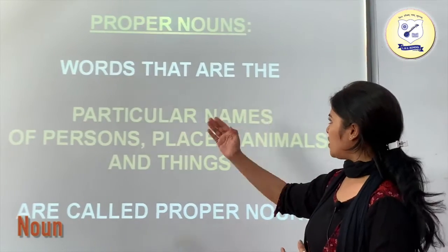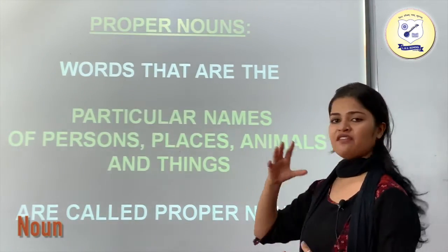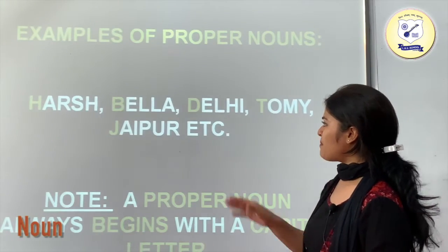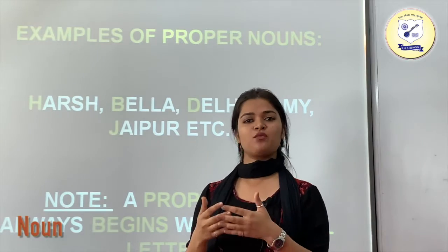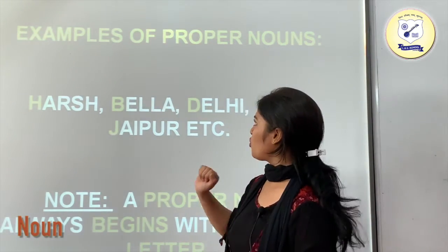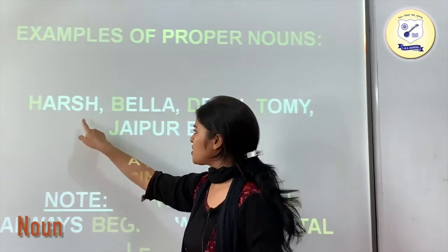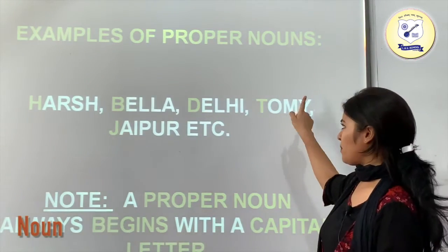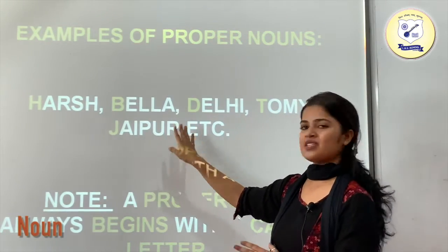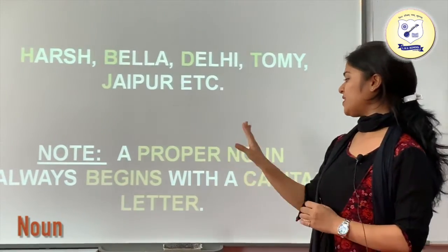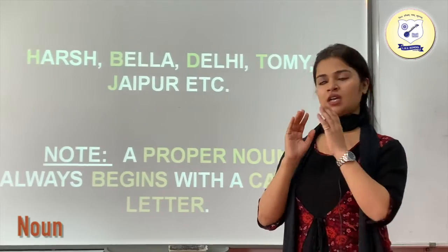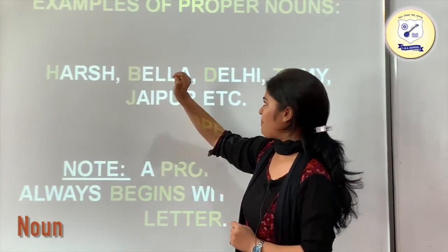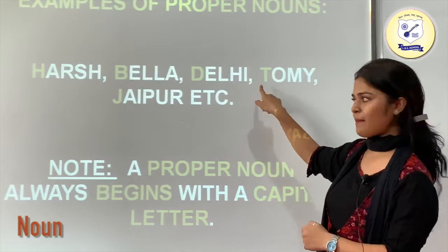Now we have proper nouns. Words that are the particular names of a person, place, animal or thing are called proper nouns. If I am saying I am talking about a boy, that is a common noun, but if I specify the name — like Harsh — that is a proper noun. Examples: Harsh, Bella, Delhi, Tommy, Jaipur. Note: a proper noun always begins with a capital letter — H in Harsh, B in Bella, D in Delhi, T in Tommy, J in Jaipur.